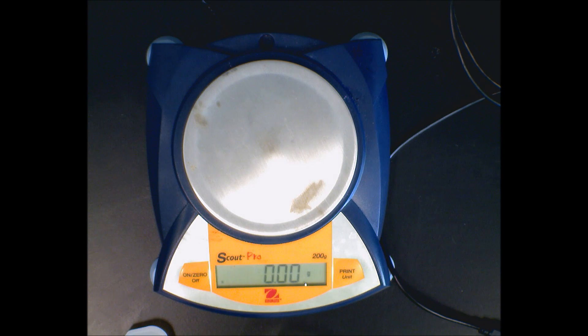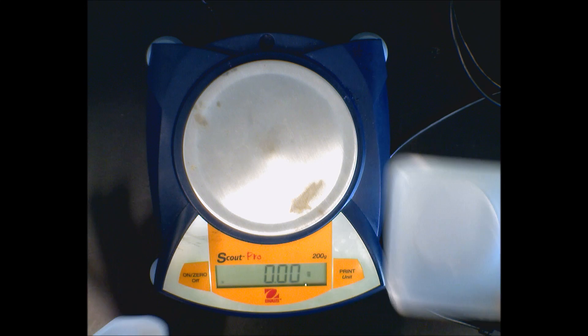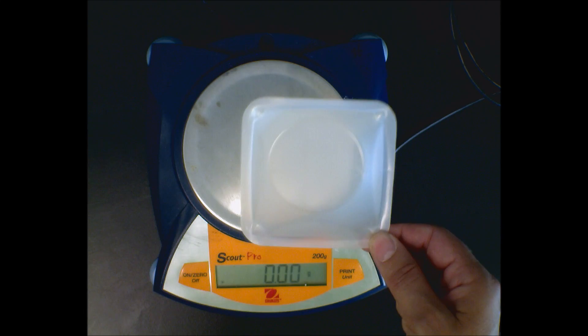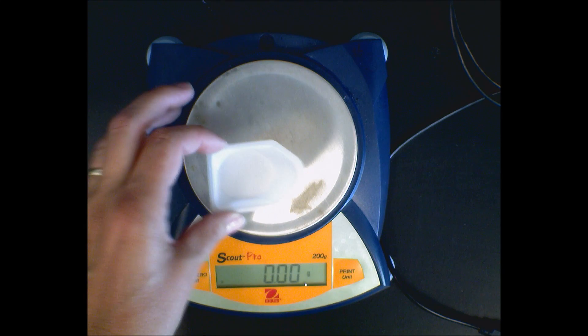Now, you never put chemicals directly on a balance because it can contaminate it, get chemicals in it, and could ruin the metal in the balance. So there are these things called weighing boats. They come in different sizes and different shapes. This one would hold quite a bit. This one looks more like the named boat.